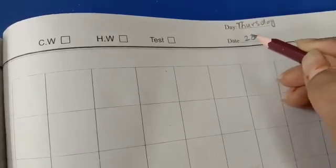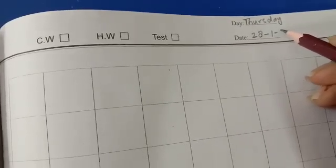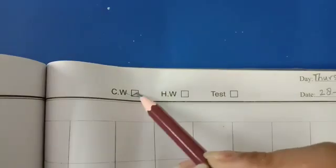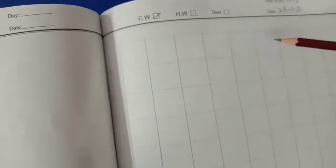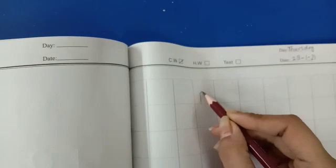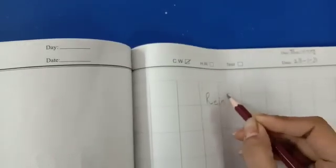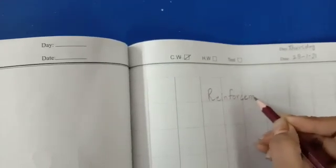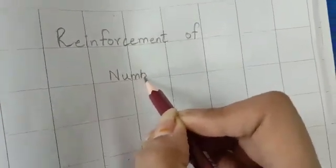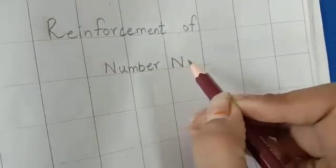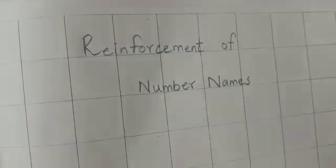And date is 28th of January 2021. And this is our classwork. And over here, this is our heading line. I hope you all remember the pattern of this work. And over here, we will write reinforcement of number names. Okay, students? Like this.